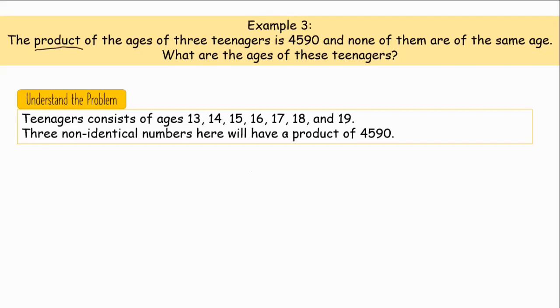And they have a product of 4,590. Pag sinabi nating product, kailangan pipili tayo ng tatlong iba-iba na numbers out of this set. Tapos, imultiply natin yung tatlong yun. Ang magiging sagot dapat ay 4,590.